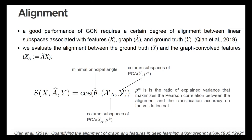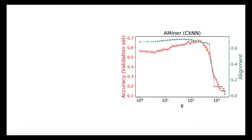And the number of dimensions of those two subspaces are determined by maximizing the Pearson correlation between the alignment and the classification accuracy on the validation set. This figure shows the alignment for CKNN graphs of increasing density on AMiner. We find that reduction in classification accuracy induced by overdense graphs is linked to a strong disruption of subspace alignment. In the limit of the complete graph, alignment approaches the value of zero, which means that the minimum principal angle is one-half of pi, indicating that the two subspaces are orthogonal.